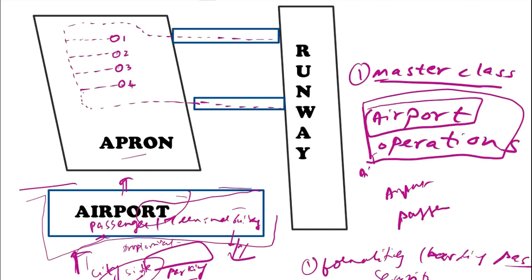The apron is basically a place where aircraft are parked. In this diagram we have represented it in the form of a parallelogram. We can see stands numbered one, two, three, and four — these are the aircraft stands, also known as bays, where the aircraft will be standing. When the aircraft lands on the runway, it will go to the parking stand.